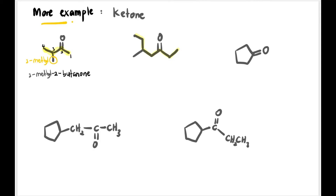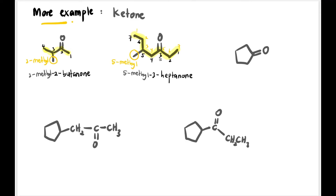Next, we have one, two, three, four, five, six, seven carbons. The full name is 3-heptanone — not 5-heptanone. Using the lower number (black numbering = three, yellow = five), we use three. So it is 3-heptanone, and it has a methyl substituent at carbon five. Full name: 5-methyl-3-heptanone.